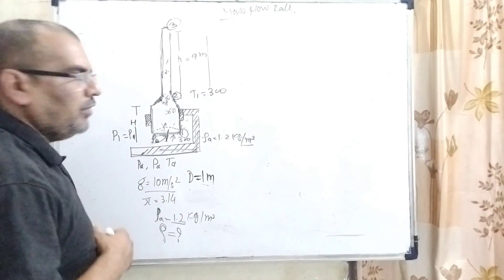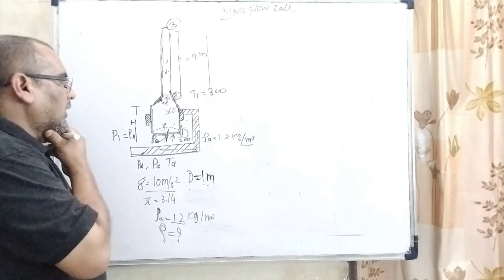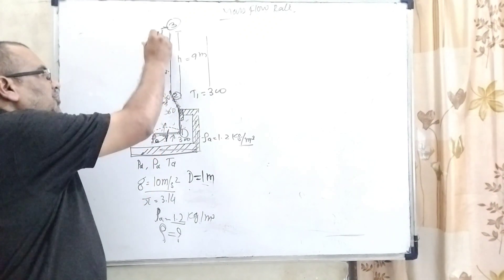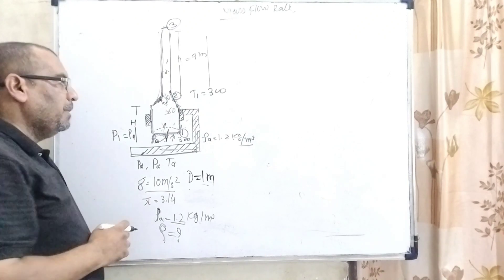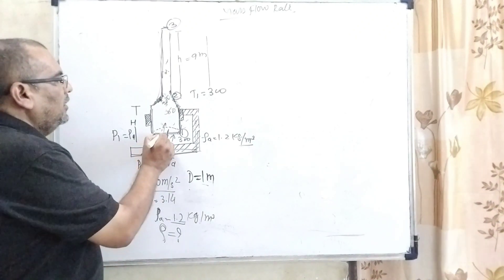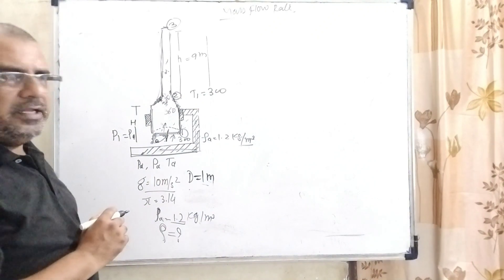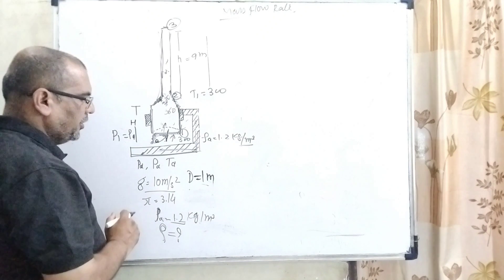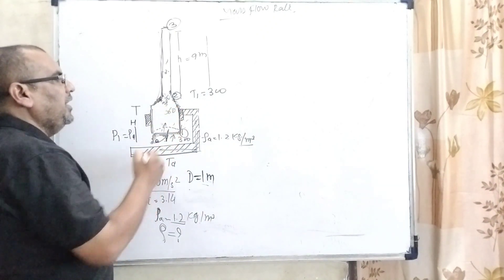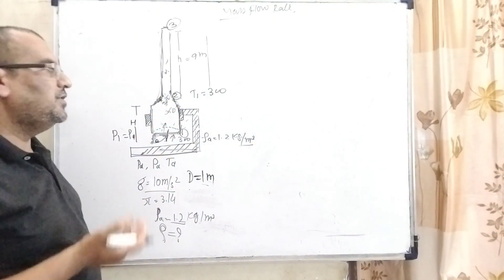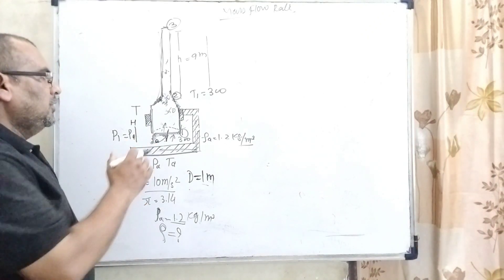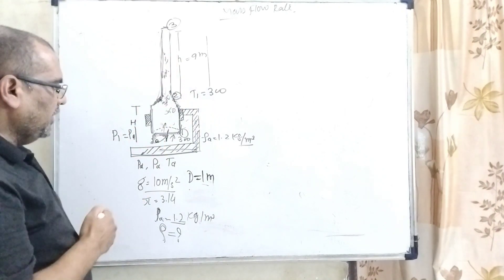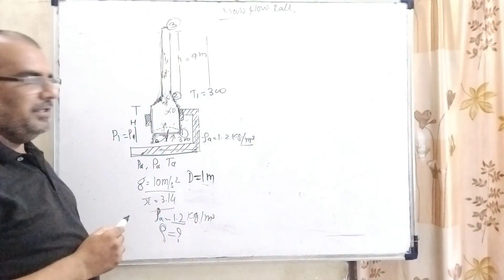Here, first of all we have to understand what the question says. We are given a furnace with height capital H connected to a chimney with height 9 meters. The air, which we take as ideal gas, has density 1.2 kilogram per meter cubed. When it gets heated, you know very well its density reduces, and it goes upward. At that time we use the mass flow rate.